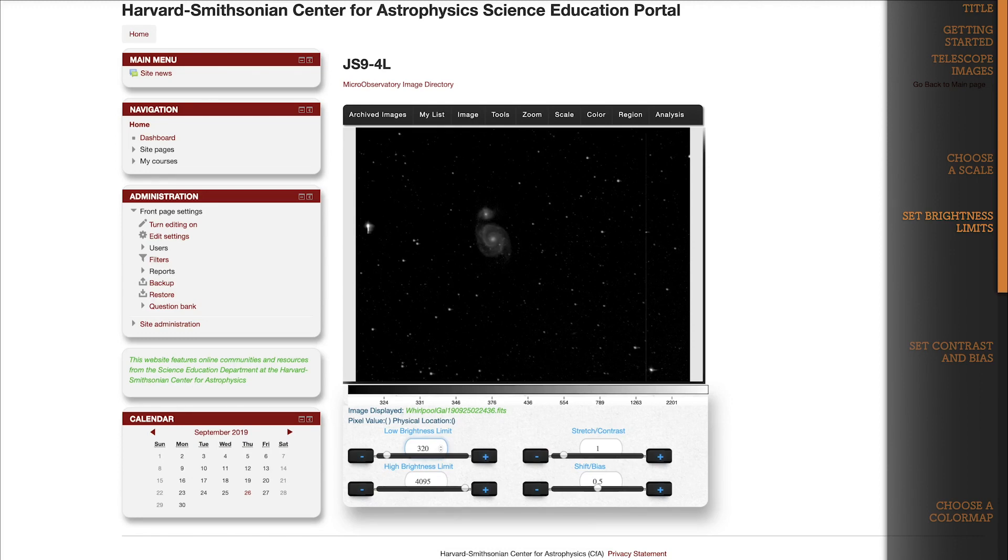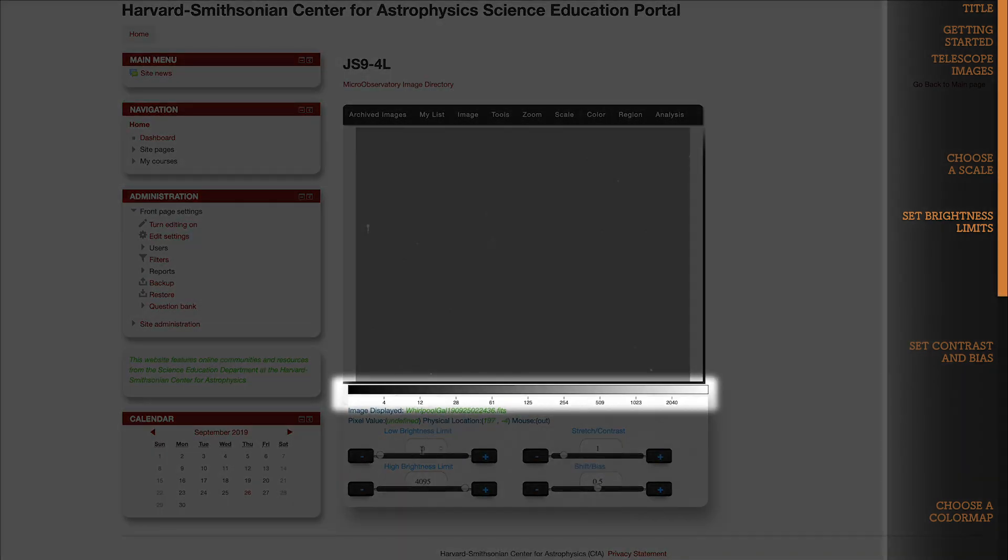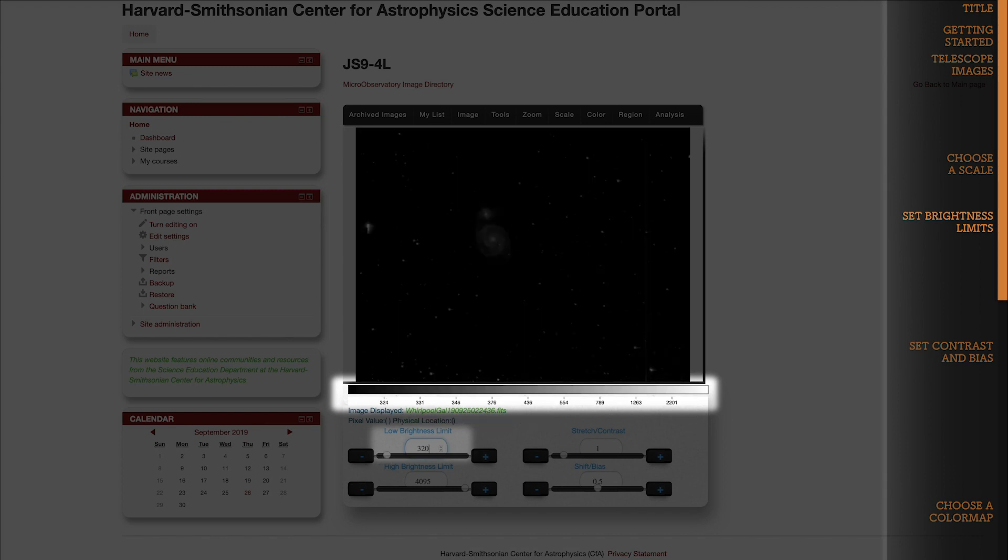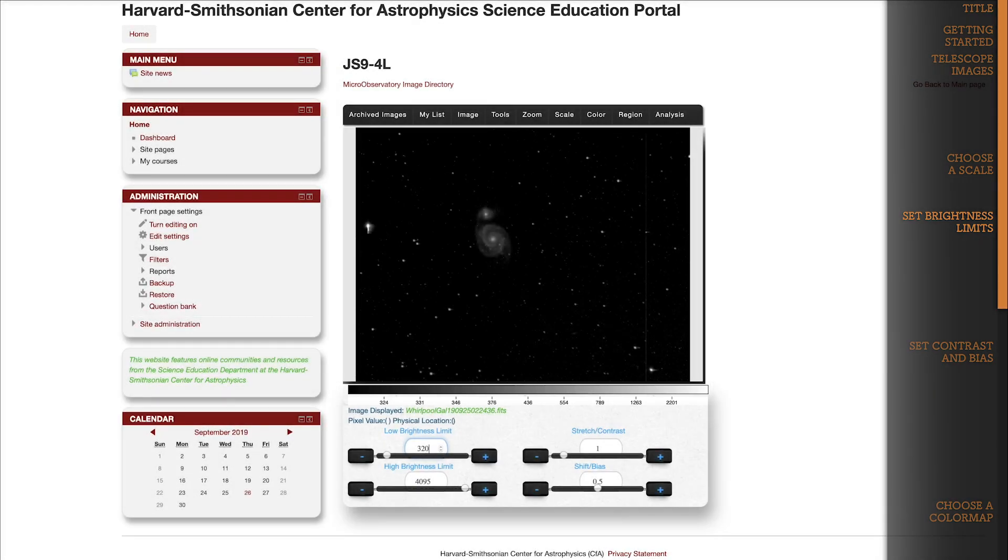I'm going to redo this process to show you one more thing. Watch what happens to the color bar when I change the low brightness limit to 320. Did you see how the values changed? It's important to pay attention to this relationship between pixel values and the color scale in JS9.